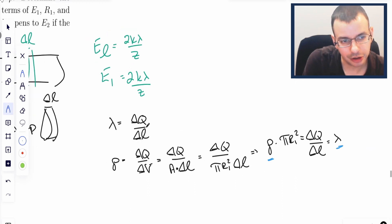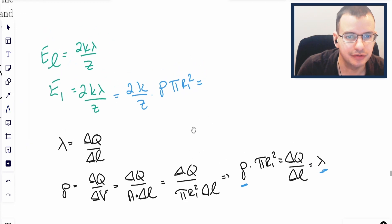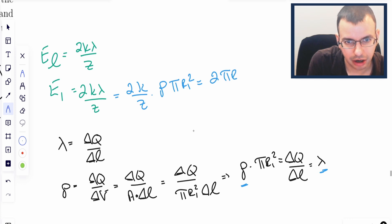We can rewrite this as 2K over Z times lambda, which we know is the same as rho pi R1 squared.